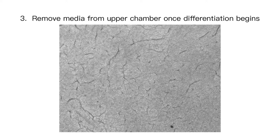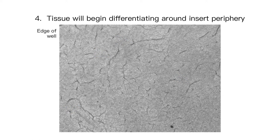Third, once adult stem cells begin to show signs of differentiation in Mimics expansion media, transition of the cells into an air-liquid interface should be initiated. For Mimics GI tissues, this occurs after approximately four days in the transwell system. This image is an example of the ideal tissue morphology for initiating the transition to the air-liquid interface — note the beginning formation of tissue invaginations.